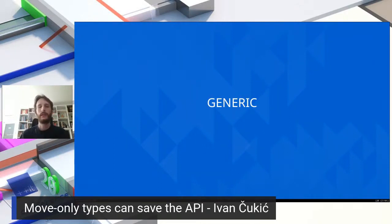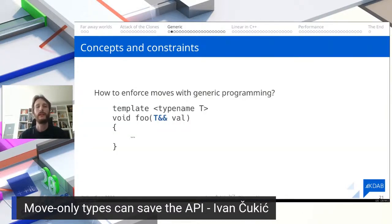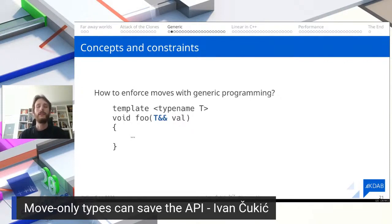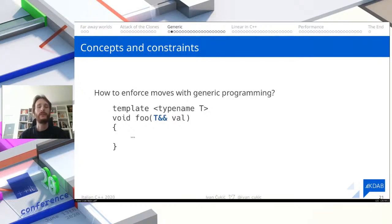If we have a generic library and want to do something like rvalue references with function templates, we could try a function template parameterized on T and say foo(T&&). The problem is this doesn't have the same effect — this is formerly known as a universal reference, now called a forwarding reference in the standard, and it will catch absolutely everything. If we want to restrict this to work only on rvalue references, we need more advanced techniques.